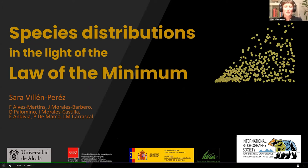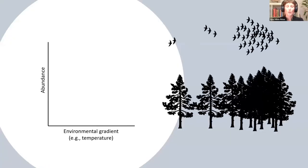Thank you for coming. My name is Sara Villen-Perez and we'll talk about species distributions in the light of the law of the minimum. I will ask you to think of a species you know and imagine the relationship between abundance and an environmental gradient for this species, for instance, temperature.